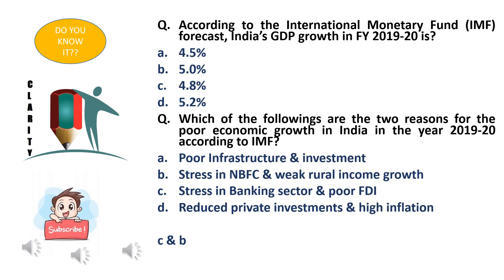Coming to the next question: according to the IMF forecast, India's GDP growth in financial year 2019-20 is: option A - 4.5%, option B - 5%, option C - 4.8%, option D - 5.2%. Let me explain what GDP is. GDP is the monetary value of all finished goods and services made within a country during a particular period. It provides an economic picture of a country and is used to estimate the size of an economy and its growth rate.